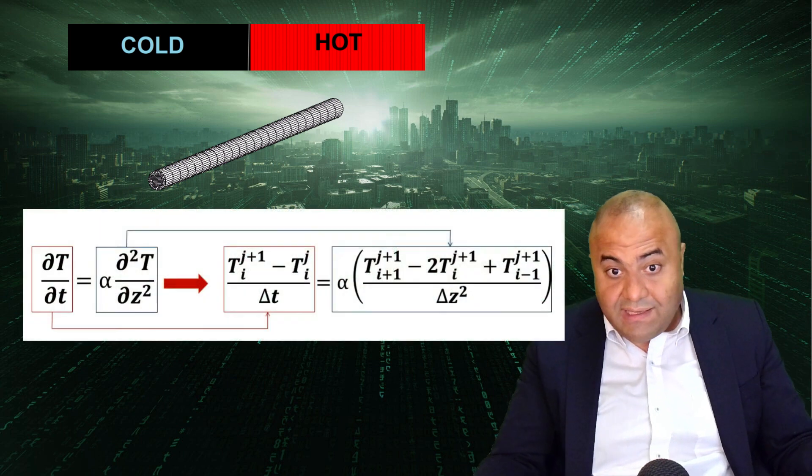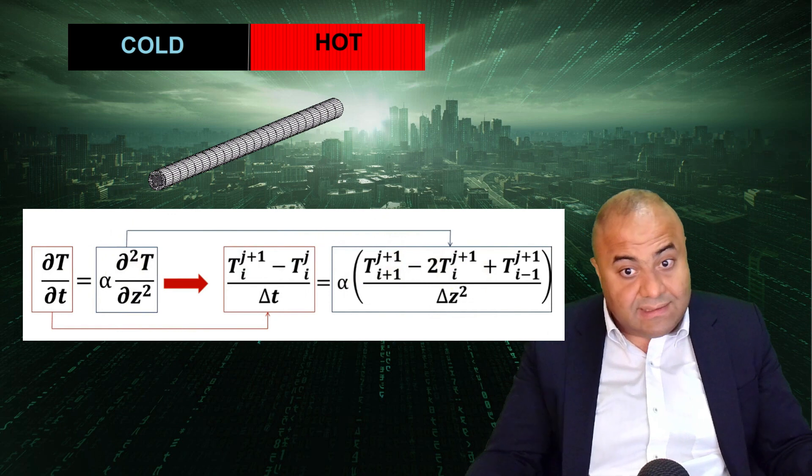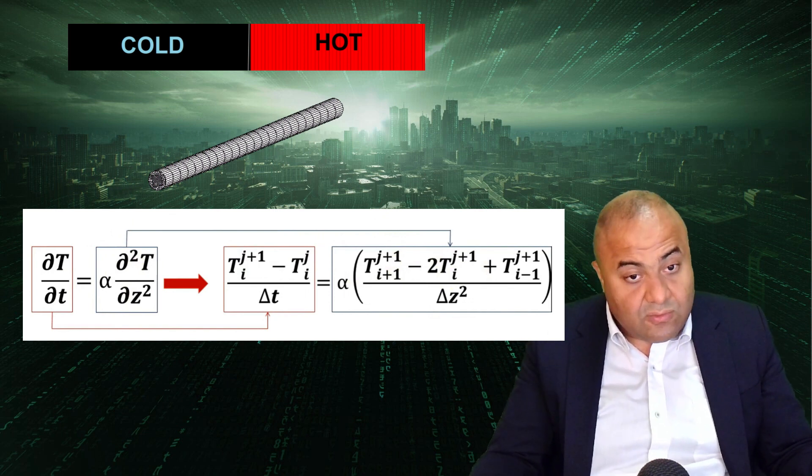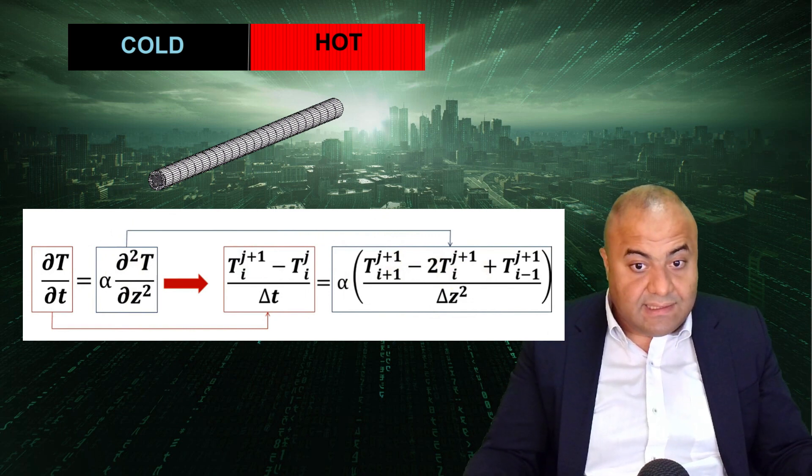The continuous PDEs are approximated by dividing the physical domain into a grid or mesh. The domain is discretized in both space and time, creating a set of discrete points or elements where the physical quantities will be calculated after discretizing the equations.